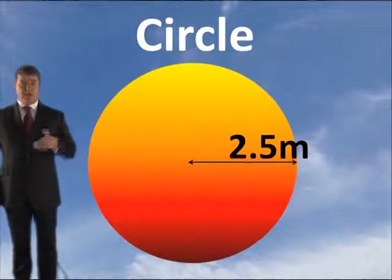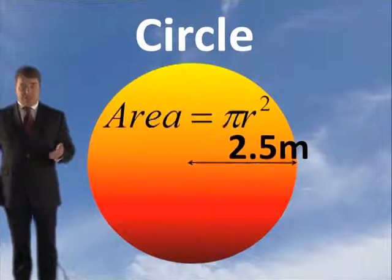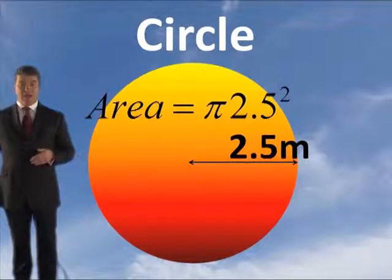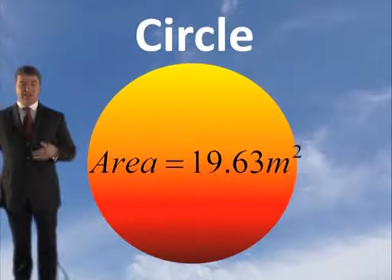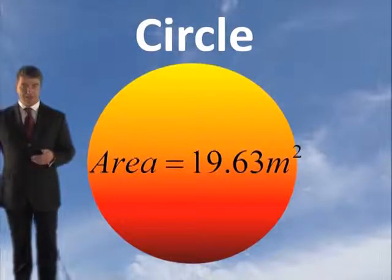Determine the area of this circle. All you do: pi r squared — pi times 2.5 squared. Area equals 19.63 square metres.